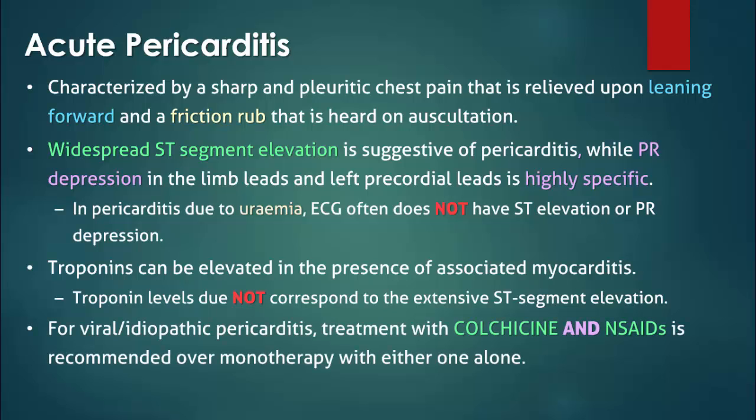In cases of pericarditis of viral or idiopathic etiology, the addition of colchicine to NSAIDs helps reduce symptoms and prevent recurrences, and so the combination of NSAIDs and colchicine is preferred over monotherapy with either drug alone. Corticosteroids are usually restricted to patients in which NSAIDs are contraindicated, or there is some specific indication for their use, such as connective tissue disease.